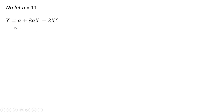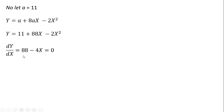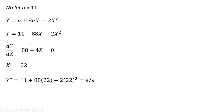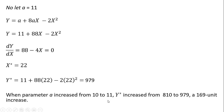Now let a equal 11 — a small increase in the parameter a, going from 10 to 11. How does this affect the maximum value of y? Substituting 11 in for a, taking the derivative with respect to x and setting it equal to zero gives 88 divided by 4, which is 22. So the optimal value of x is 22. Plugging 22 into our objective function, y star is now 979. So when parameter a increased from 10 to 11, the maximum value of y increased from 810 to 979, a 169 unit increase. We could repeat this for a equals 12, but you can see this is kind of tedious.